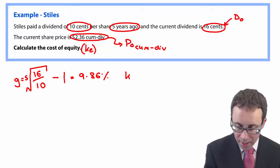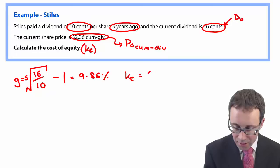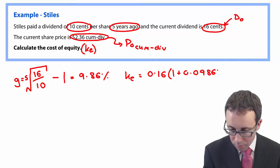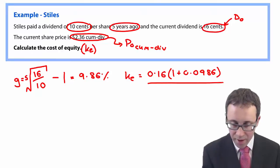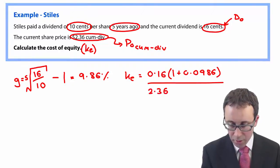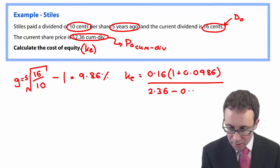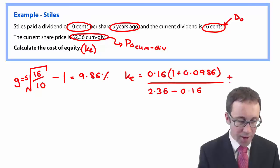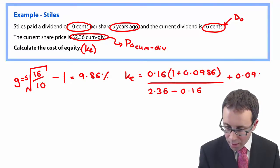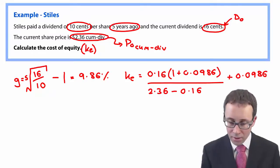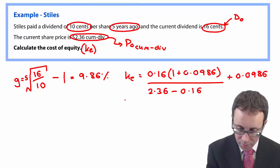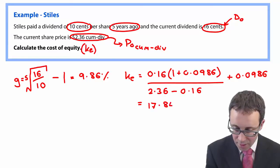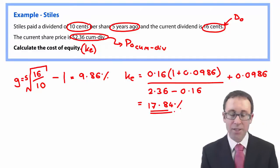To work out KE, we take D0 of 16 cents, multiply by one plus the growth rate, and divide by the ex-div price. The cum-div price is $2.36, from which we deduct the current dividend of 16 cents to get the ex-div price. We then add on the growth rate of 0.0986. Tapping that into your calculator, KE works out to 17.84%.